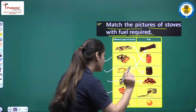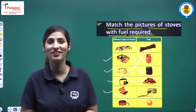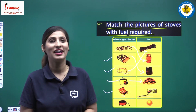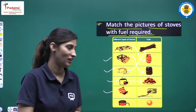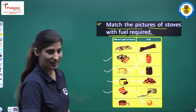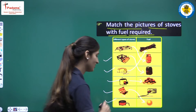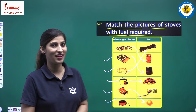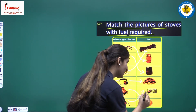Next one is a solar cooker. What do we need for a solar cooker? We need sunlight. We have earlier discussed that in a solar cooker, sunlight acts as fuel. And the last one is an electric heater — we need electricity for it. That's it.